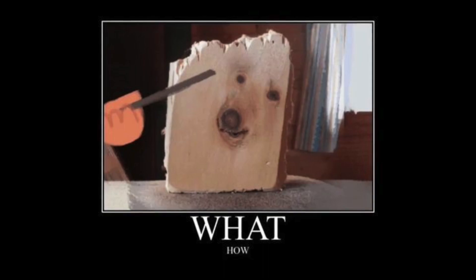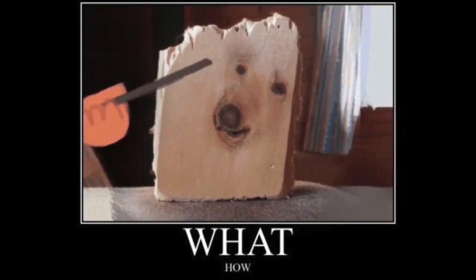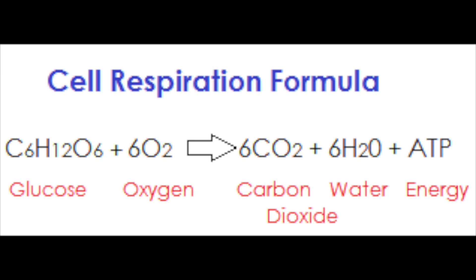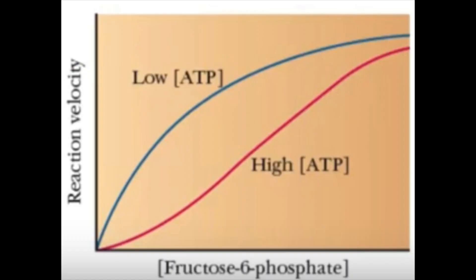You might also wonder how oxaloacetate goes back into the mitochondria. When ATP levels are low, the body needs to generate more energy. In this case, oxaloacetate is used in the citric acid cycle to produce more ATP. The citric acid cycle is part of cellular respiration, where glucose is broken down to produce ATP. This process is favored when energy levels in the cell are low. So instead of being diverted to gluconeogenesis, oxaloacetate will be combined with acetyl-CoA to continue the citric acid cycle and generate more ATP to meet the energy demands of the cell.